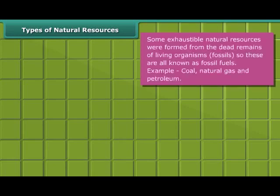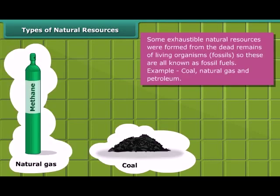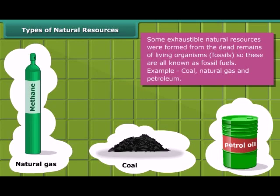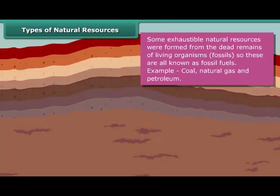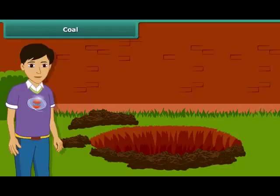Some exhaustible resources like coal, natural gas and petroleum were formed from the dead remains of living organisms called fossils, and hence these are also known as fossil fuels. Now let us know about these fossil fuels in detail. Let us start with coal.